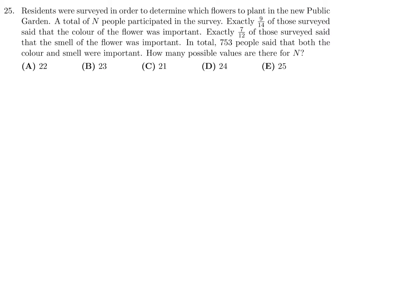Residents were surveyed in order to determine which flowers to plant in the new public garden. A total of n participated in the survey, n people. Exactly 9 out of 14, 9 over 14 of those surveyed said that the color of the flower was important. Exactly 7 over 12 of those surveyed said that the smell of the flower was important. In total, 753 people said that both the color and the smell were important. How many possible values are there for n?